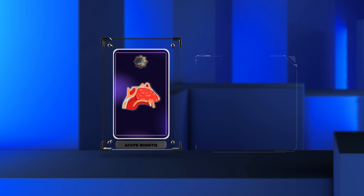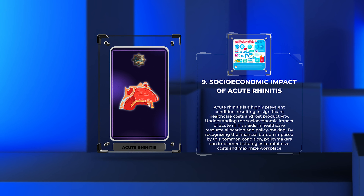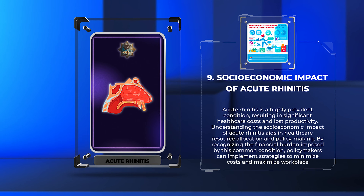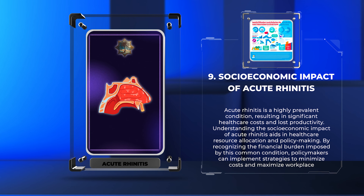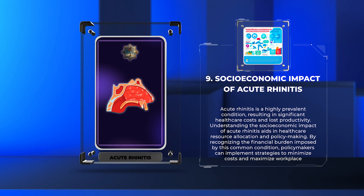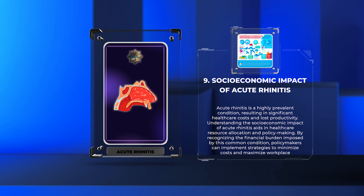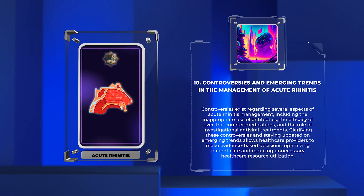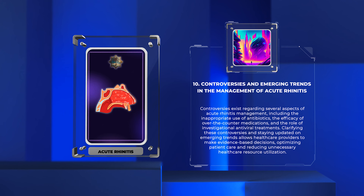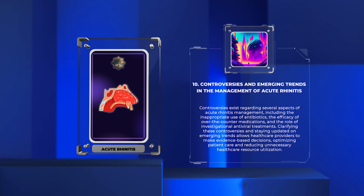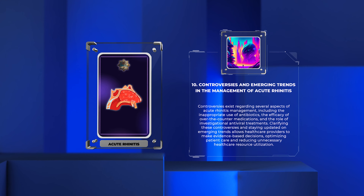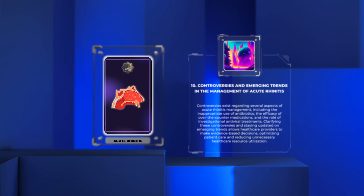Acute rhinitis is a highly prevalent condition, resulting in significant healthcare costs and lost productivity. Understanding the socioeconomic impact of acute rhinitis aids in healthcare resource allocation and policymaking. By recognizing the financial burden imposed by this common condition, policymakers can implement strategies to minimize costs and maximize workplace productivity. Controversies exist regarding several aspects of acute rhinitis management, including the inappropriate use of antibiotics, the efficacy of over-the-counter medications, and the role of investigational antiviral treatments. Clarifying these controversies and staying updated on emerging trends allows healthcare providers to make evidence-based decisions, optimizing patient care and reducing unnecessary healthcare resource utilization.